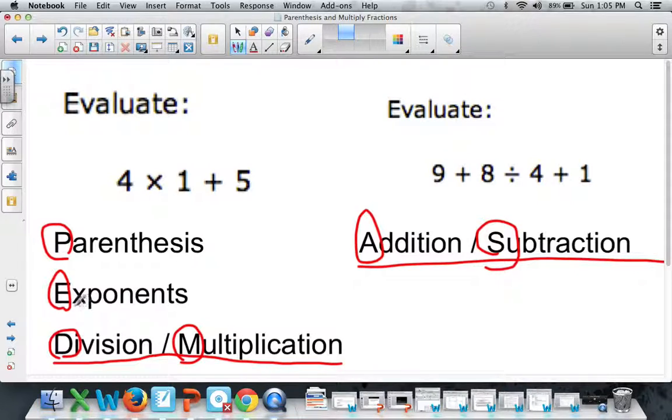what I mean is, just like you read a book from left to right, you read a number sentence from left to right. So, whatever you see first when it comes to these two, you do first because they're tied. But, if you see something above it anywhere in the number sentence, you got to do that first because there is an order to these operations.